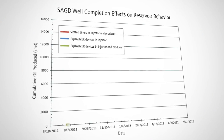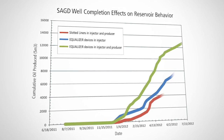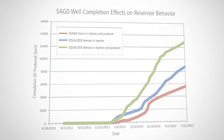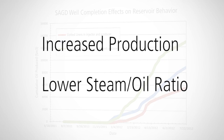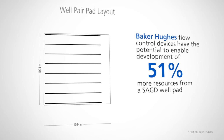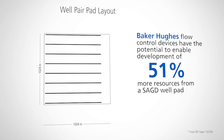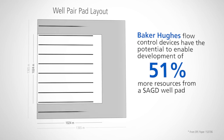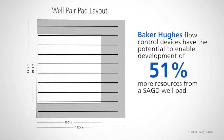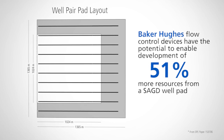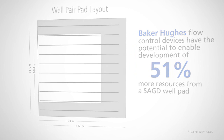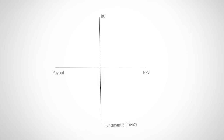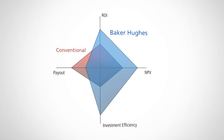Baker Hughes' technologies can result in significantly higher cumulative oil production from SAG-D well pairs, by assuring even steam distribution and increasing oil mobility. Baker Hughes' flow control devices have the potential to enable development of 51% more resources from a SAG-D well pad. Because inner tubing strings aren't needed, casing can be smaller in diameter and extend 33% further into the reservoir. Each pad can include two additional wells. The complete Baker Hughes SAG-D solution has the potential to speed production, improve recovery, lower capital costs, and reduce operating expenditure for oil sands operators.